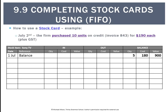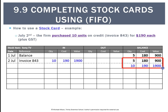On July the 2nd, we purchased 10 units on credit, invoice 843, for $190 each plus GST. We record the date, 2nd of July, invoice 843, with 10 units coming in at $190 for a total of $1,900. Note we're only using the cost prices in the stock card — we don't include GST. Over in the balance column, we list things in FIFO order, rewriting the previous 5 units at $180, then the 10 units at $190 underneath.